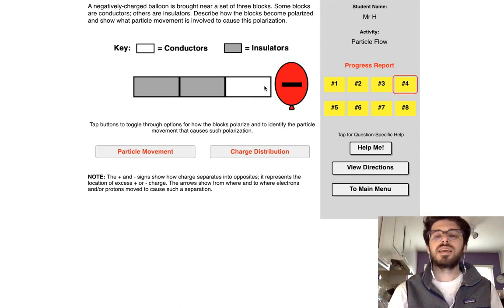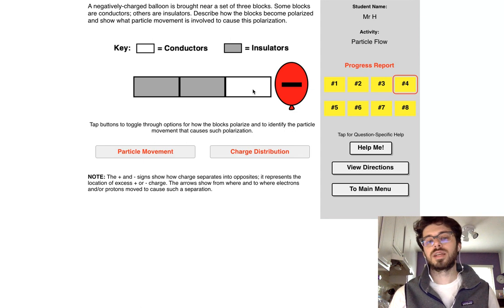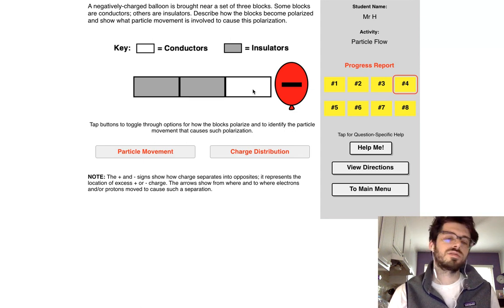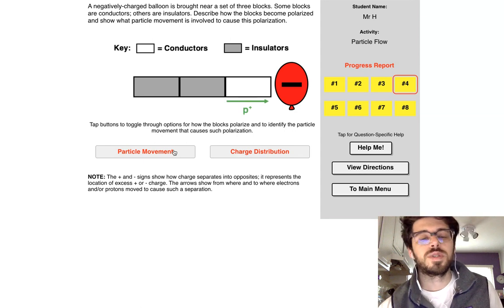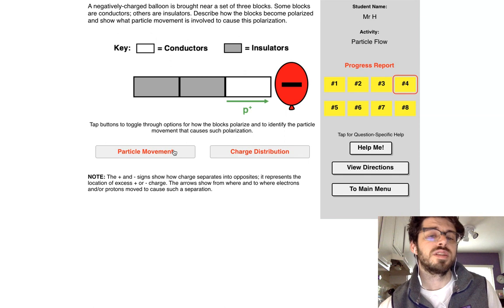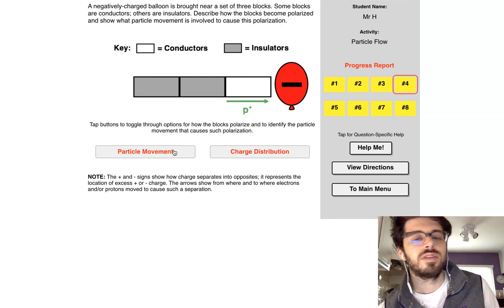If you bring a negatively charged balloon close to your object, electrons are only going to flow through the conductor. They're not going to flow through the insulator. Let's toggle through some things and see if they work. What's wrong with this one? Protons don't flow.